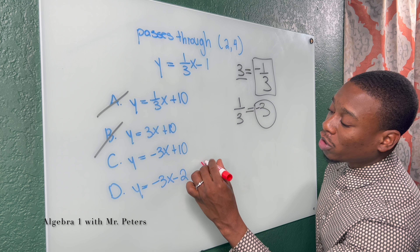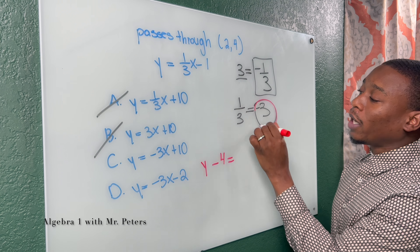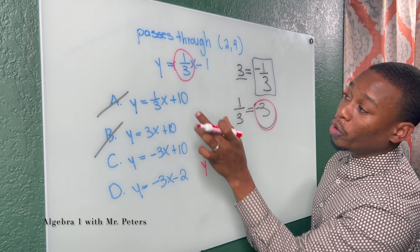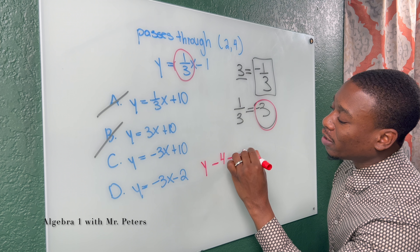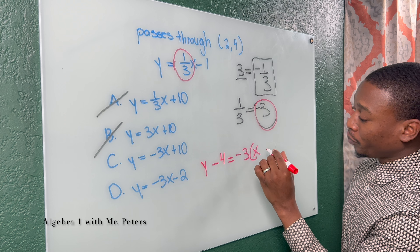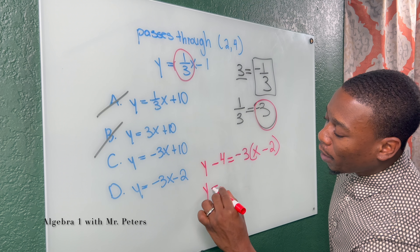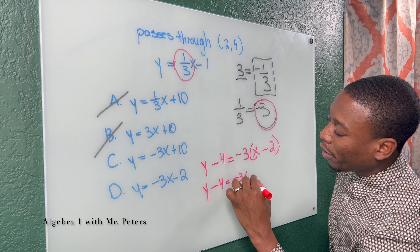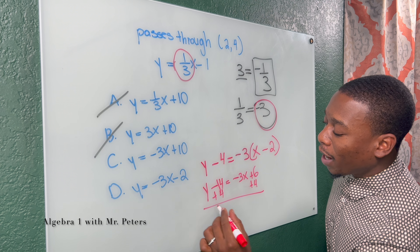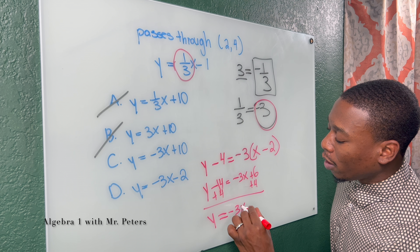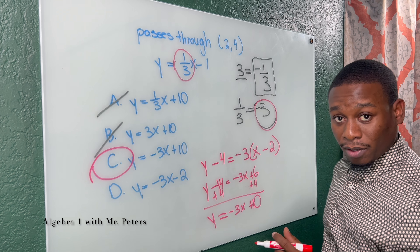Once we substitute the slope in — Y minus four is equal to — we're going to put the negative reciprocal slope, not the original one. We only put the same slope if it's a parallel line; we're working with perpendicular. So this turns into negative three times X minus two. Then Y minus four is equal to negative three X plus six. When I add four on both sides, my final answer would be Y is equal to negative three X plus 10. So my answer choice would be C.